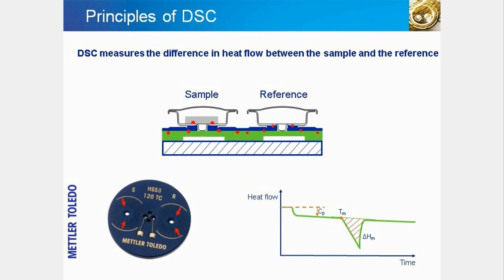In a DSC experiment, the heat flow from the furnace to the sample is measured relative to the heat flow to a reference material. The sample and reference crucibles are identical, except that the reference crucible is usually empty. In this particular heat flux DSC design, the sample and reference crucibles are heated from below. The sample is placed in a crucible, or pan, which sits directly on top of the sensor, surrounded by a heated chamber, or furnace. The sensor is the heart of the DSC and detects the heat flow. An enlarged view shows a Mettler-Toledo sensor with its typical star-shaped arrangement of thermocouples.